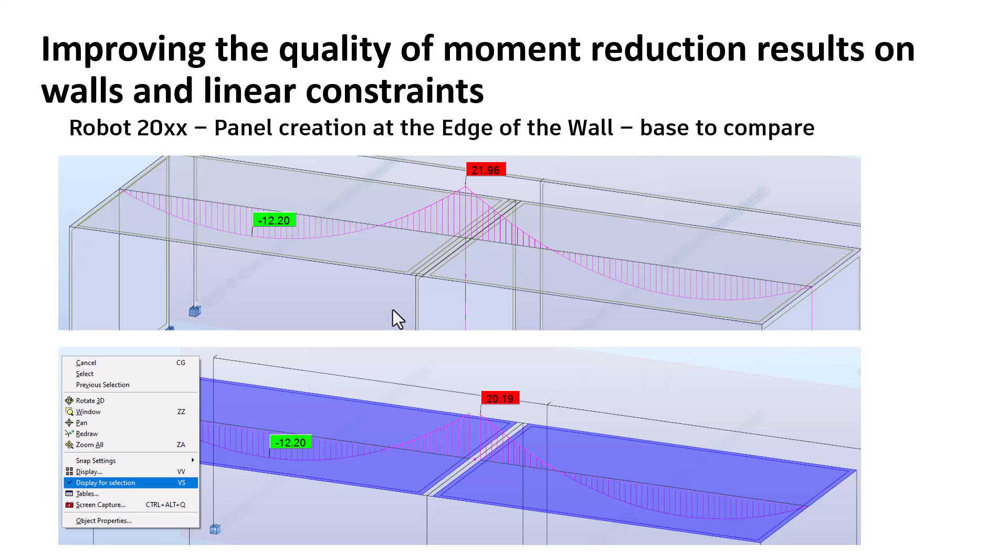So what I do: I create a panel here and I cut this panel at the edge, and I recreate two small panels or I could have created one. And after I can display result only for selection. So I have the bending moment at the edge.